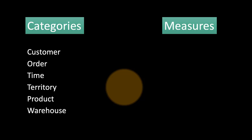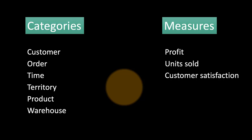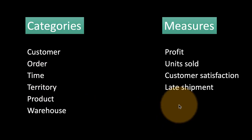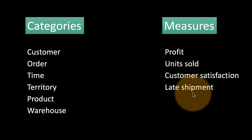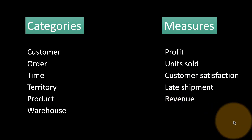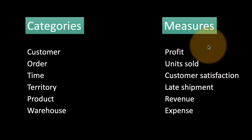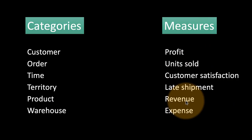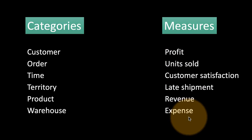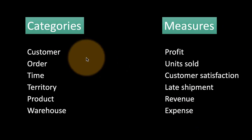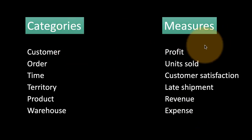Measures are numeric variables — things like profit, units (the number of units sold), customer satisfaction if measured as a number between 0 and 5, late shipment (how many late shipments have been done), revenue, and expense. All of these are examples of measures, provided we are measuring them in actual numeric terms. So when you hear categories, think about factors or categorical variables; when you hear measures, think about numeric variables.